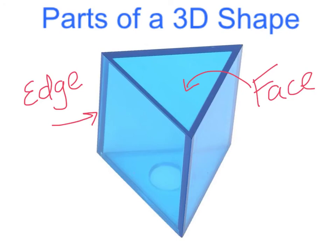The final part of a 3D shape that we are going to discuss is called the vertex. This is the place on a 3D shape where three or more faces come together to form a point. It is also known as a corner.